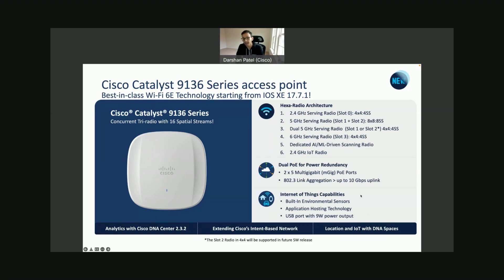On top of that, it has a 6 GHz radio at 4x4 — not 2x2. We want the best in class. There is also a dedicated AI and machine learning-driven scanning radio. It monitors interference, handles DFS channel scanning, continuously monitors your wireless network, enables intelligent packet capture, and helps figure out location quickly.